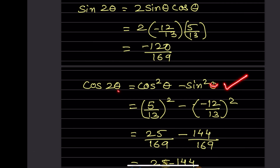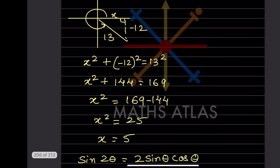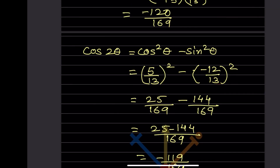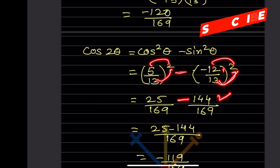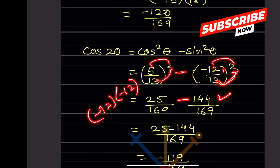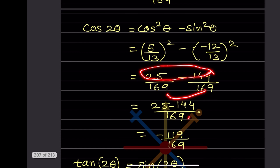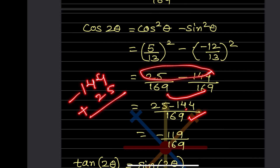For cos2θ = cos²θ - sin²θ: cos²θ = (5/13)² = 25/169 and sin²θ = (-12/13)² = 144/169. So cos2θ = 25/169 - 144/169 = -119/169.